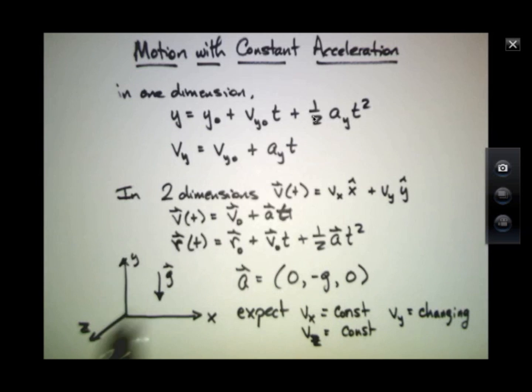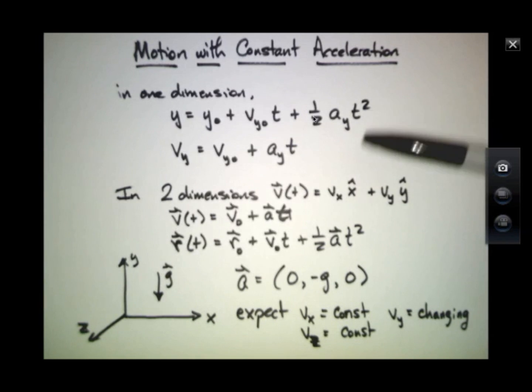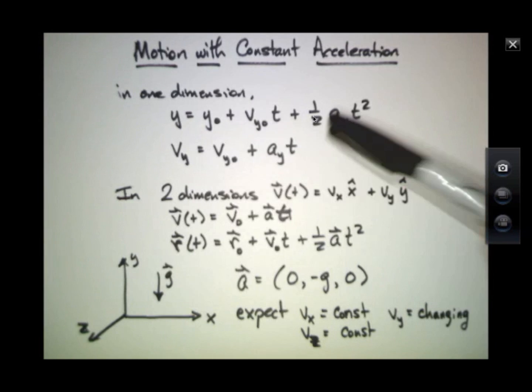And this whole thing repeats for the y-direction. In the y-direction, the acceleration in the y-direction might be different than it is in the x-direction. And the y-initial velocity might be different than the x-initial velocity and so on. So we'll have a complete set of equations like this one, or this pair, one for the x-direction, one for the y-direction, one for the z-direction, where we'll have to fill in what these constants are and then let the clock run forward.